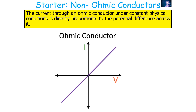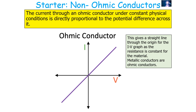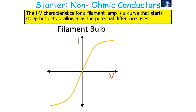The first IV graph to consider is for an ohmic conductor. The current through an ohmic conductor under constant physical conditions is directly proportional to the potential difference across it. This gives a straight line through the origin for the IV graph, indicating that resistance is constant for the material. Metallic conductors in general are ohmic conductors.